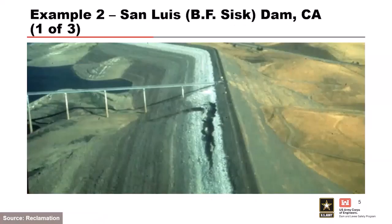The next example is San Luis Dam, now BF Fisk Dam—a Reclamation dam in California. In September 1981, the San Luis Reservoir was drawn down 180 feet in 120 days—more than one foot per day, which is quite quickly. At that time, a slide occurred on the upstream slope.